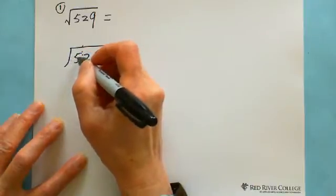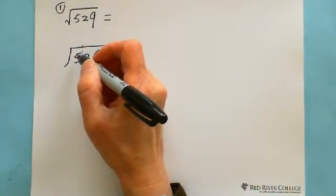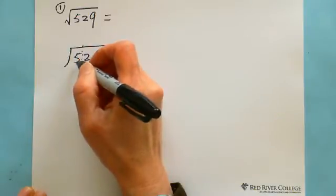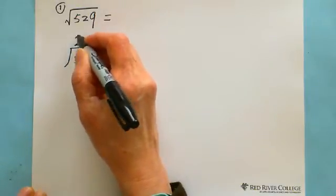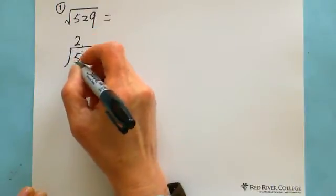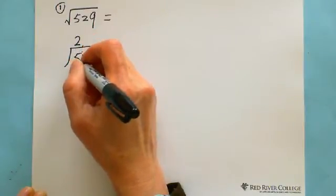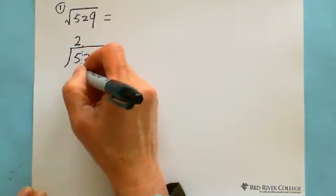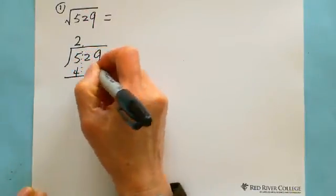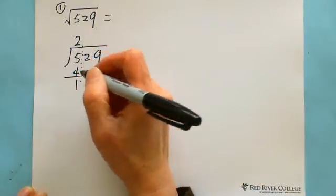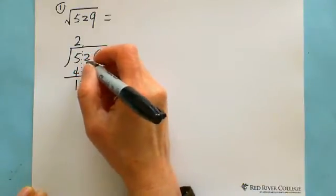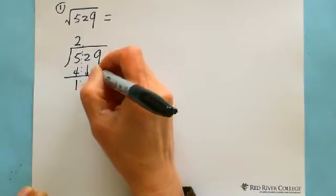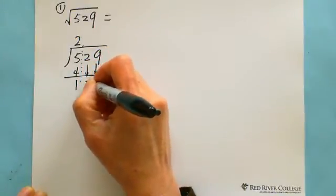Estimate what is the first number whose square is close to 5. Obviously it's 2, because 2 squared equals 4. If you put 3, 3 squared equals 9. So 2 squared equals 4, which is close to 5. Subtract it — you get 1. And when you carry down the digit, you carry 2 digits: 129.